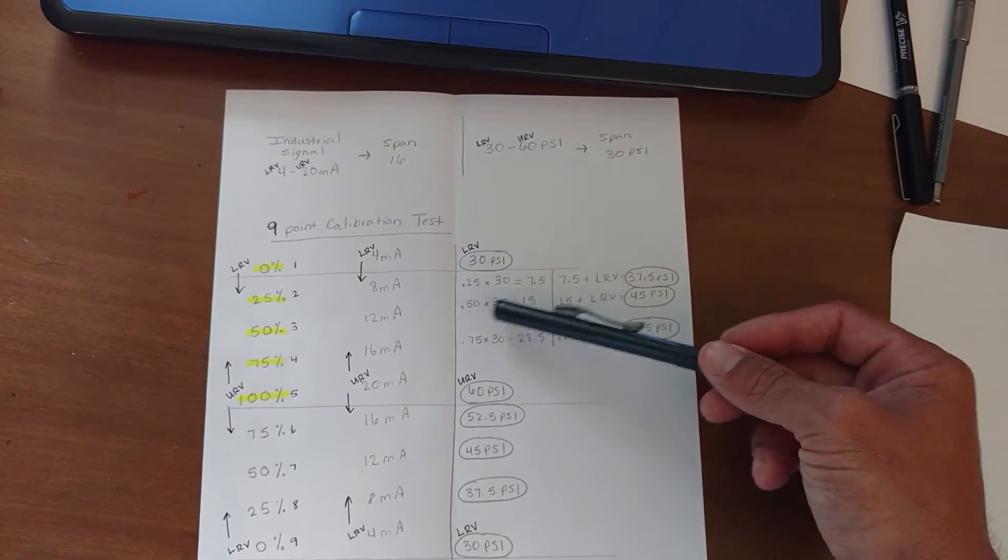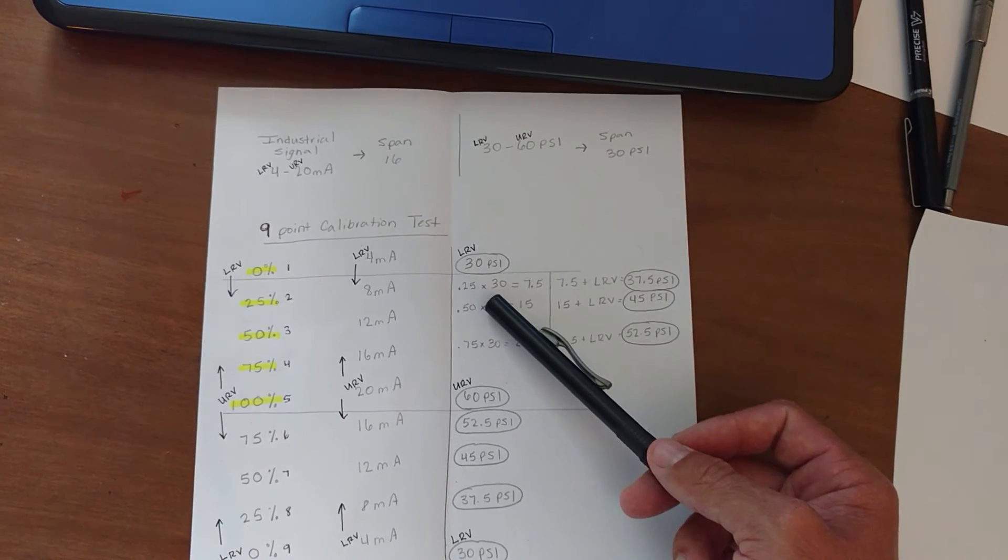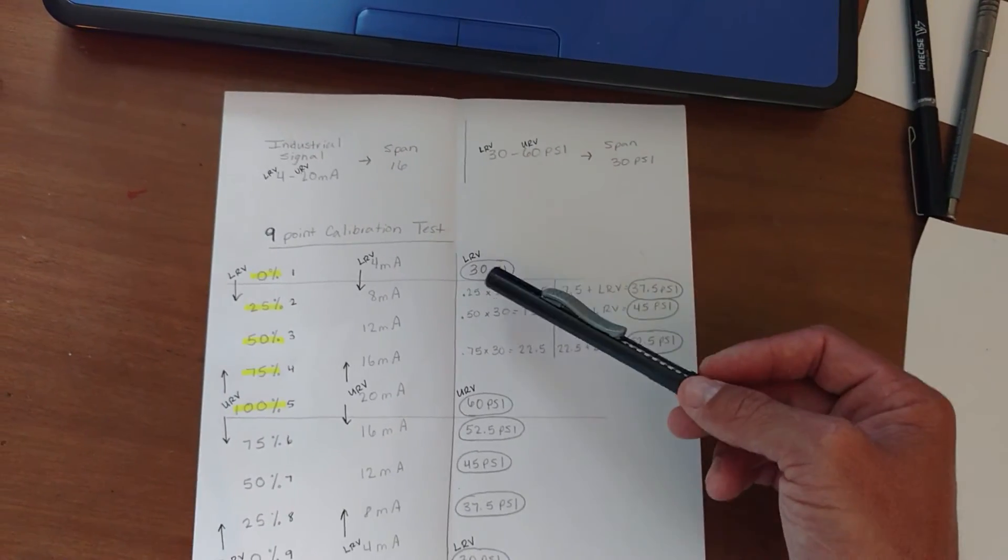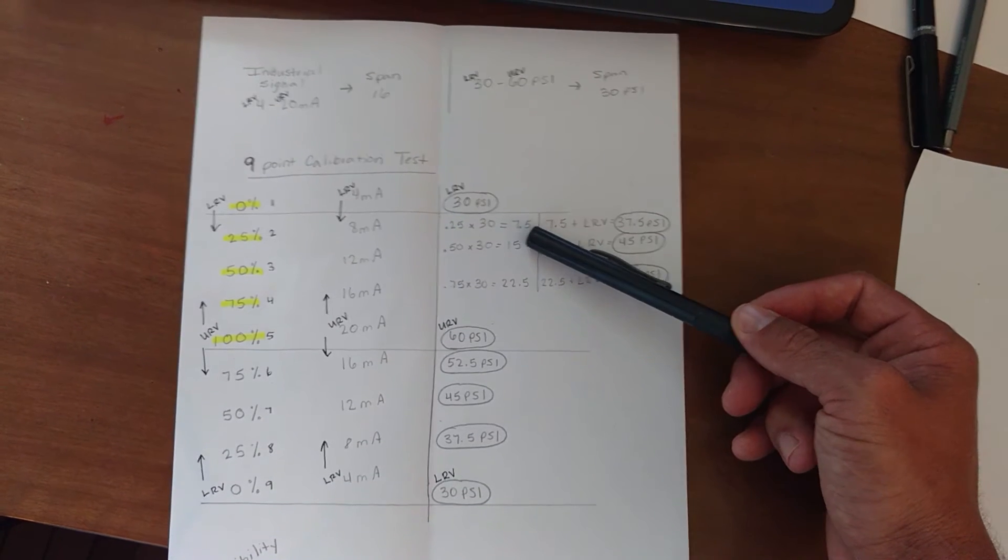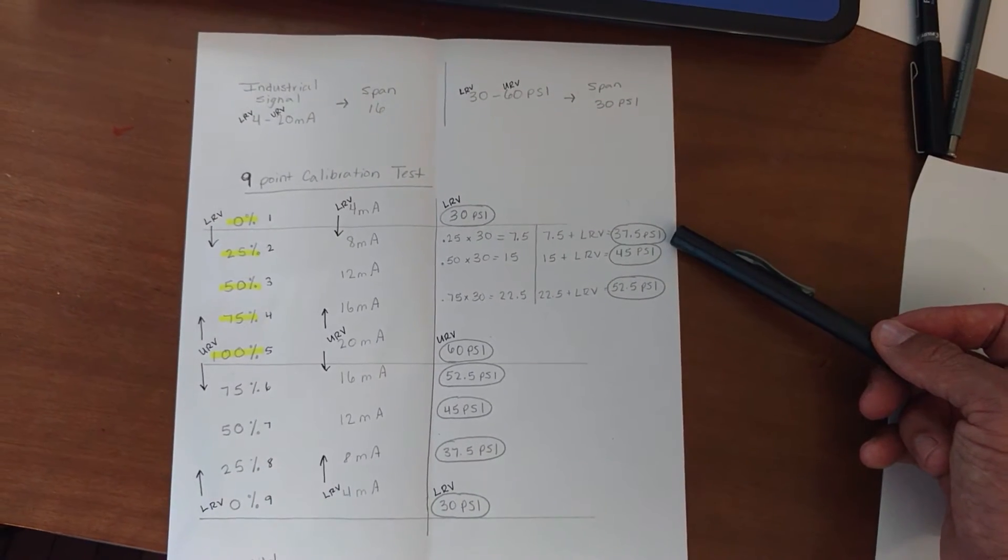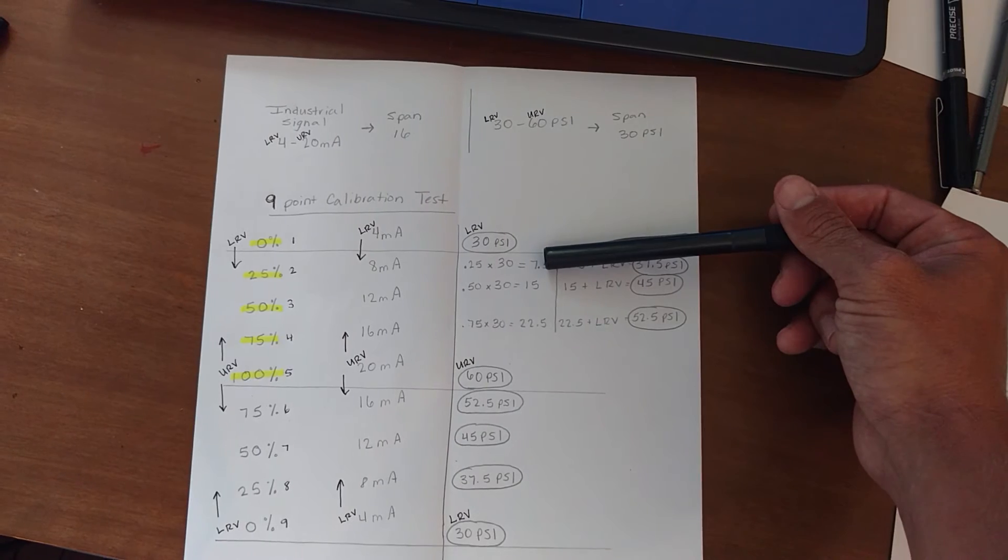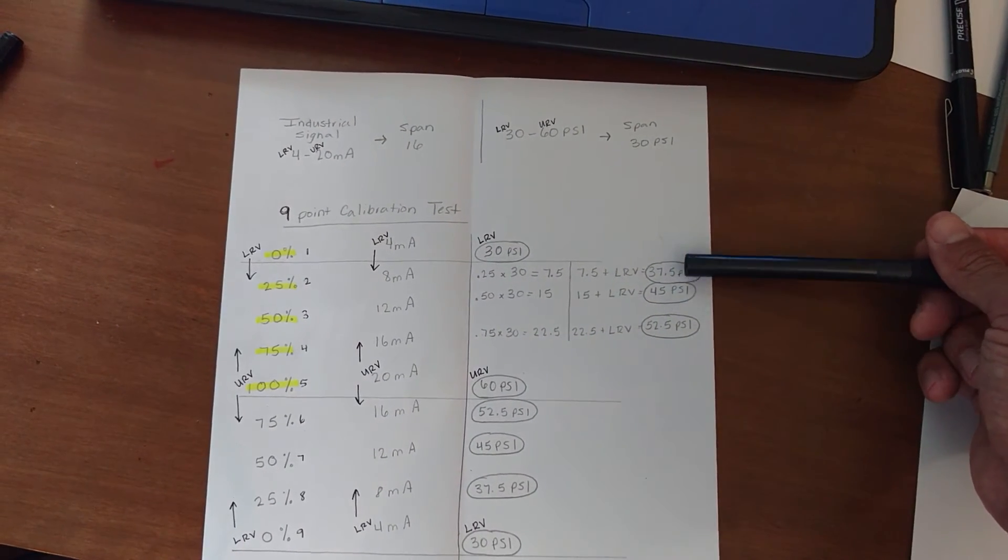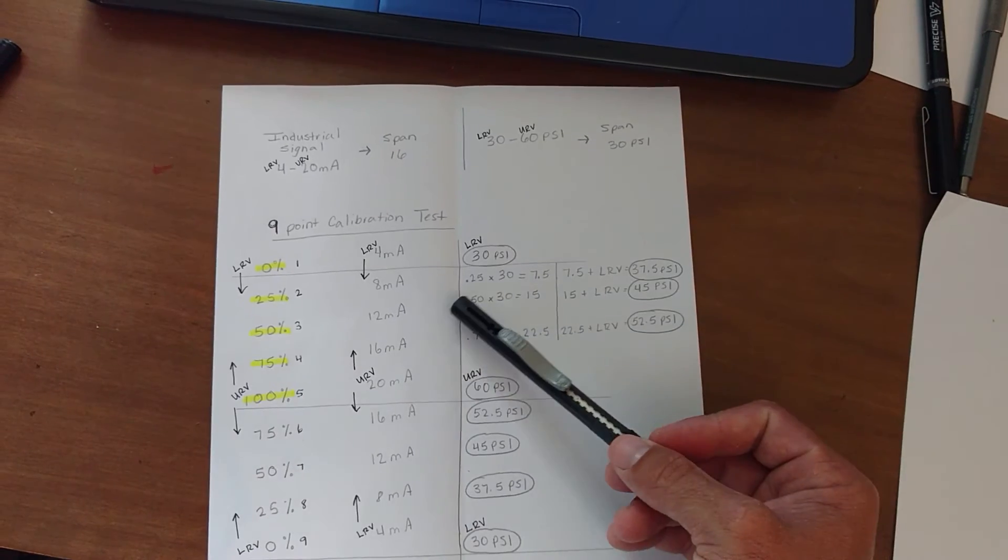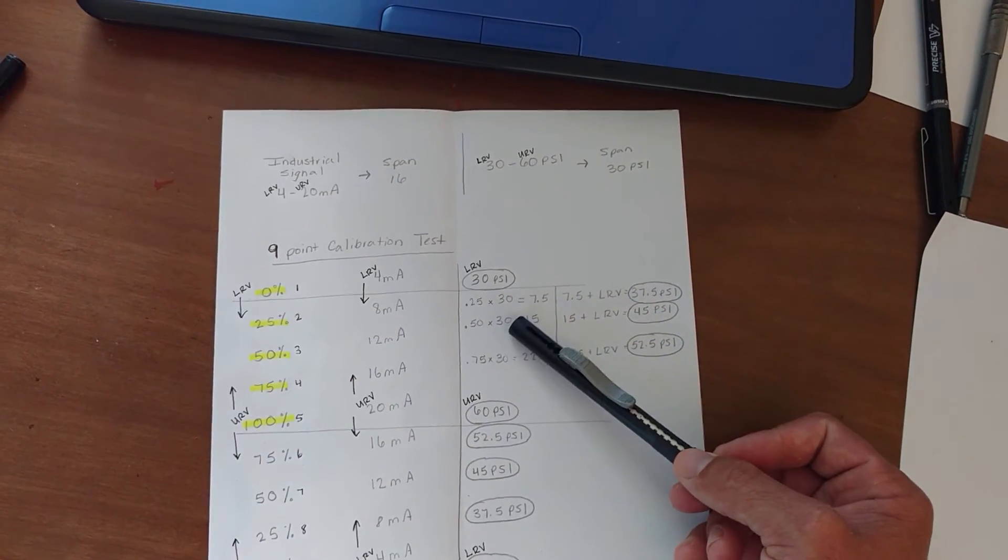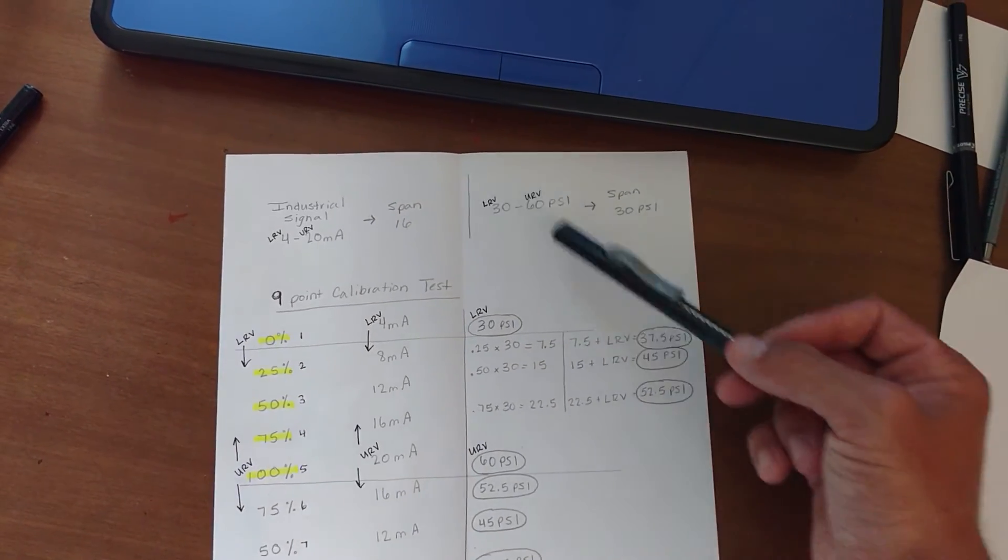So how are we going to get the 25%, 50%, and 75% of our span? Well, that's easy. We're going to do 0.25, which is 25% times our span. And that's going to give us 25% of our span, which in this case happens to be 7.5. Now, if we want to continue finding each percentage of our span, we could actually add this number, whatever it may be, to the previous number. And we could keep adding it until we get to 100%. Or we could keep using this formula. 50% times our span gives us 15. And then that number, which is 15, plus our LRV, 45 psi.